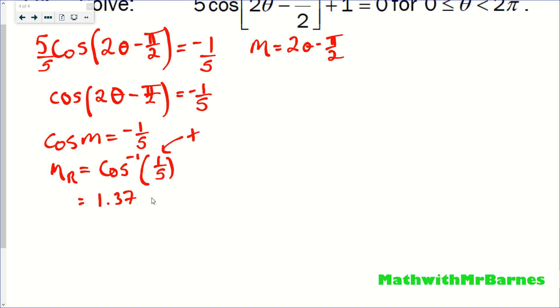Some students actually like to write the word radians after that when they've got a decimal just to make sure they don't confuse that they're still working in radians. So that's my M value. Now I go to the quadrants. So cos is negative, so that puts me in Q2 and in Q3. So in Q2, my rule is M equals pi minus MR. And in Q3, M equals pi plus MR.